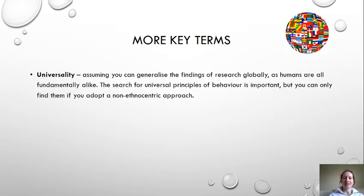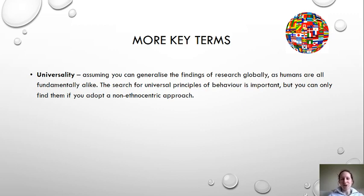Universality is the idea where you assume you can generalise your findings globally, because humans are all fundamentally alike. This is a search that is right at the root of psychology — searching for universal principles of behaviour. But you can only find those principles if you adopt a non-ethnocentric approach, because otherwise you'll have cultural bias in your research and make conclusions that aren't valid.